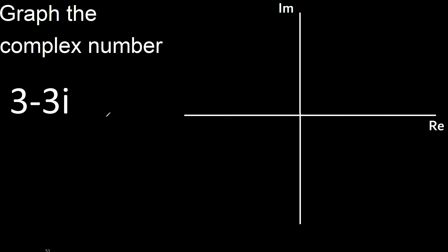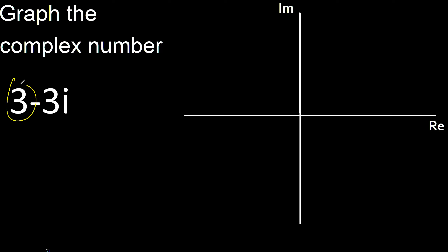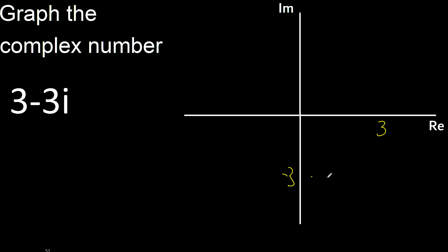3 is the real number — negative, positive. 3 is positive, therefore here is imaginary. Minus 3 is negative, positive, negative. Minus 3 is here, therefore the point is here.